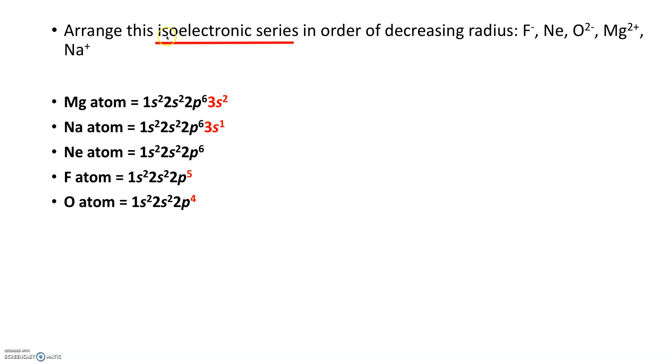Iso—think of isosceles triangle, two congruent sides. Isometric, it means the same. Why is it the same? Well in red I'm showing the valence shell.